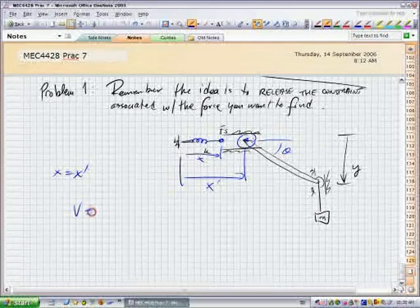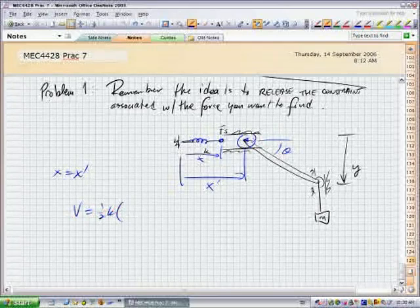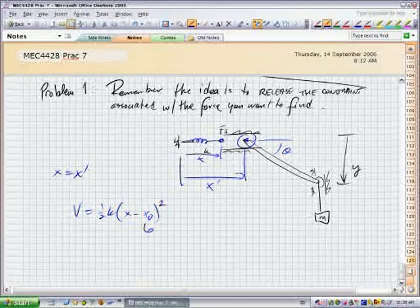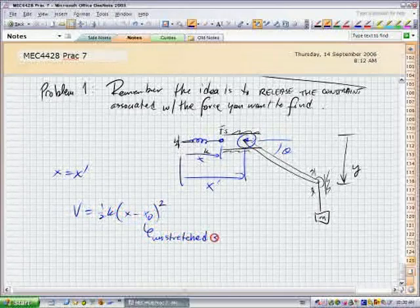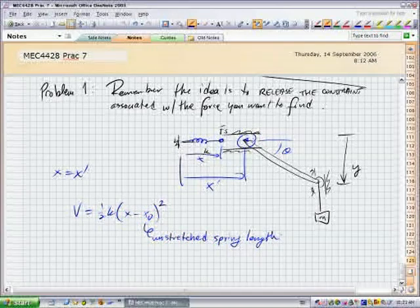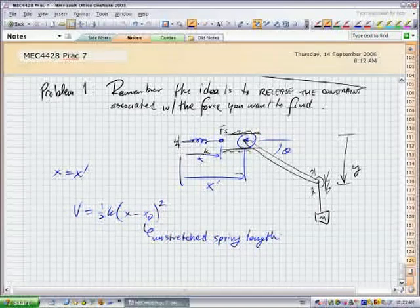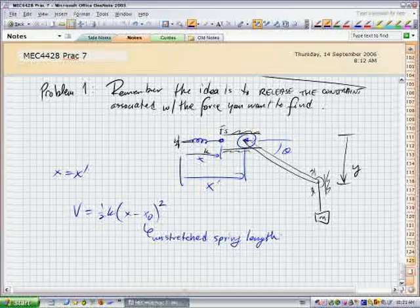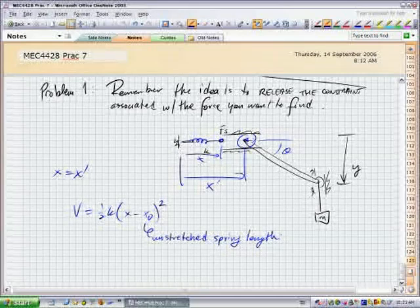So, for example, your potential energy is one half k times (x minus x naught) squared, and this is the unstretched spring length. Because if you just cut the spring out entirely, then what you're doing is you're saying, well, the spring is gone, the energy associated with the spring is gone.